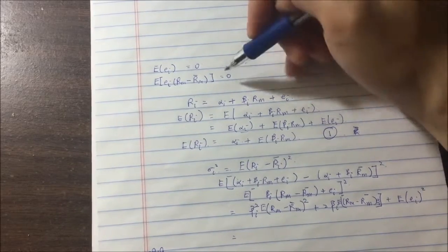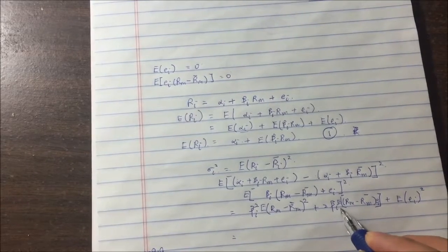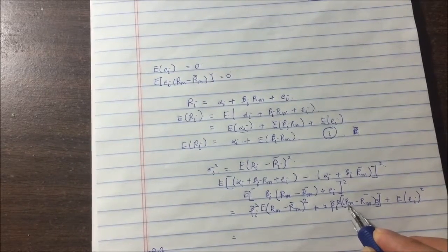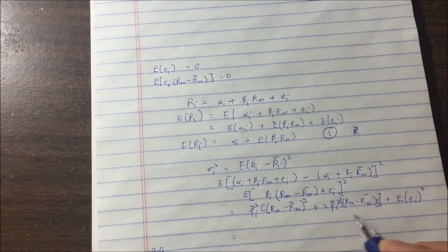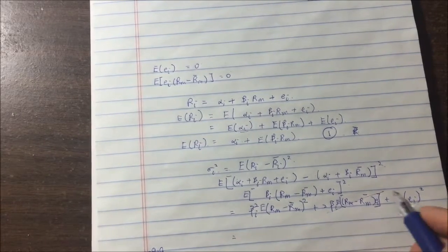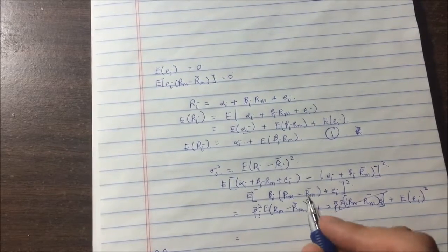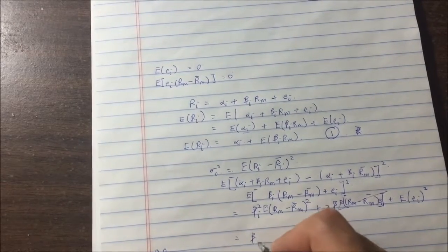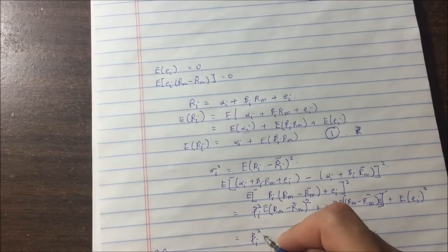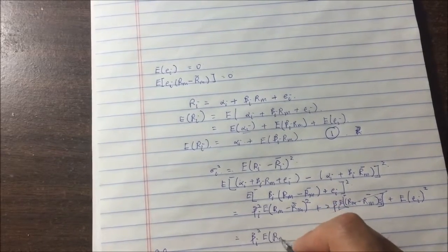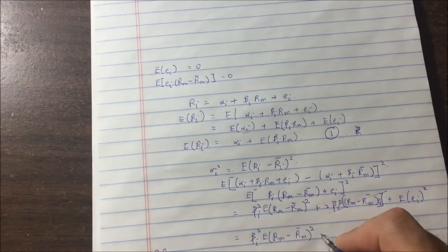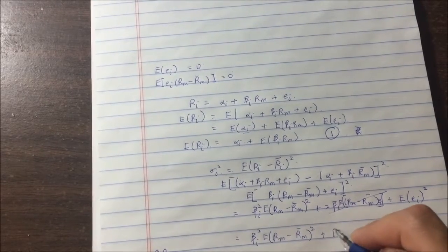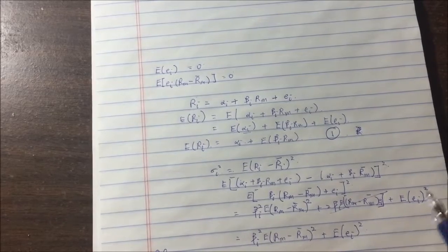We have already made the definition here that this whole term, expected return of the (RM - R̄M) times the εI is equal to zero, so this whole thing basically cancels out.